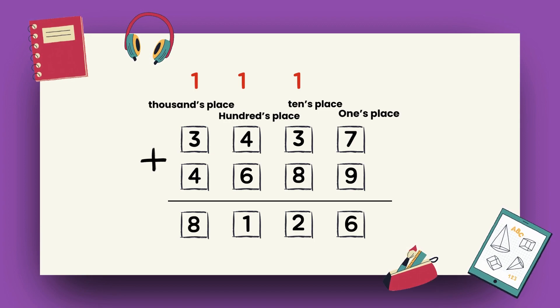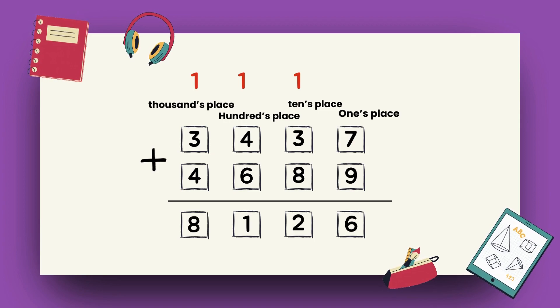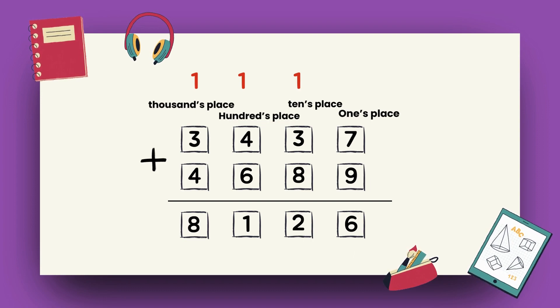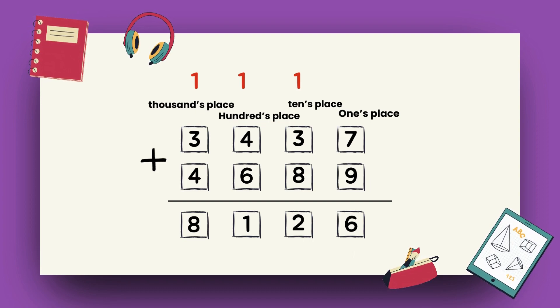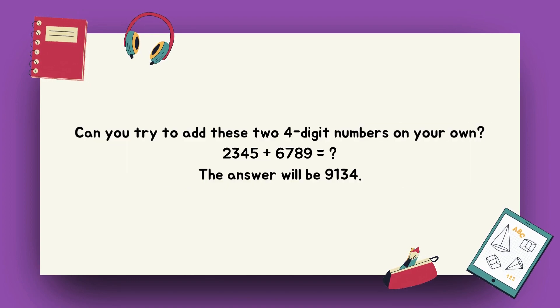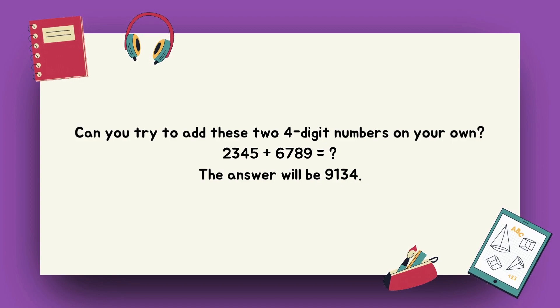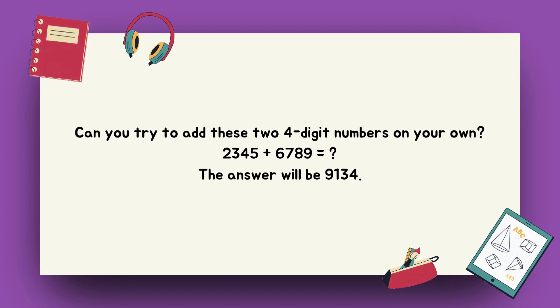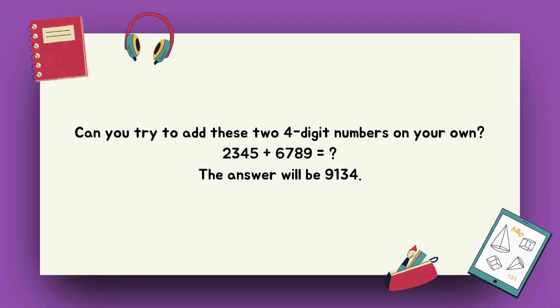Thus, 3437 plus 4689 is equal to 8126. Can you try to add these two four-digit numbers on your own? 2345 plus 6789 is equal to? Answer will be 9134.